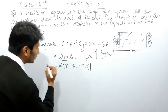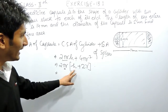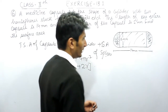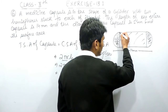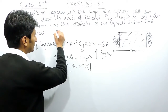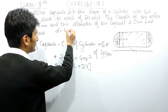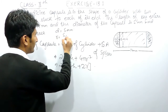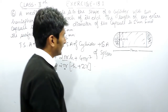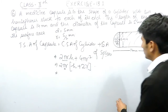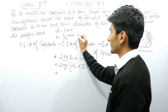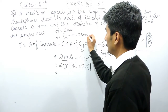Now you can substitute the values, but before that you need to find the height of the cylinder as well as the radius. It is given that the diameter is 5 millimeters, so obviously the radius will be 5 divided by 2 millimeters, which equals 2.5 millimeters.